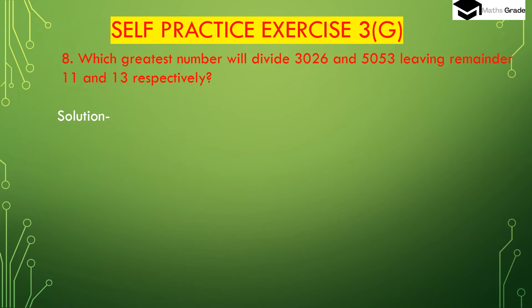Question number 8: Which greatest number will divide 3026 and 5053 leaving the remainder 11 and 13 respectively? So which greatest number will divide 3026 and 5053 such that the remainder of 3026 is 11 and the remainder of 5053 is 13?